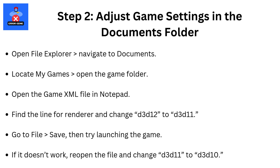Step 2: Adjust game settings in the Documents folder. Open File Explorer, then navigate to Documents. Locate My Games, then open the game folder. Open the game.xml file in Notepad. Find the line for Renderer and change D3D12 to D3D11. Go to File, then Save, then try launching the game.